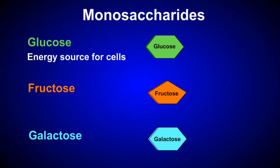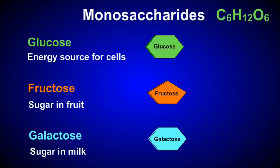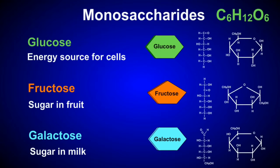Fructose is the primary monosaccharide found in fruits and plants, and galactose is the primary monosaccharide found in milk. All of these monosaccharides are 6-carbon sugars with the chemical formula C₆H₁₂O₆. They can be depicted chemically as either straight chains or rings.